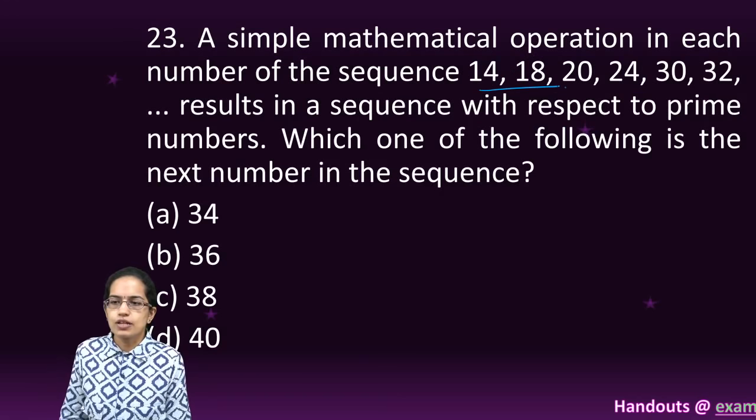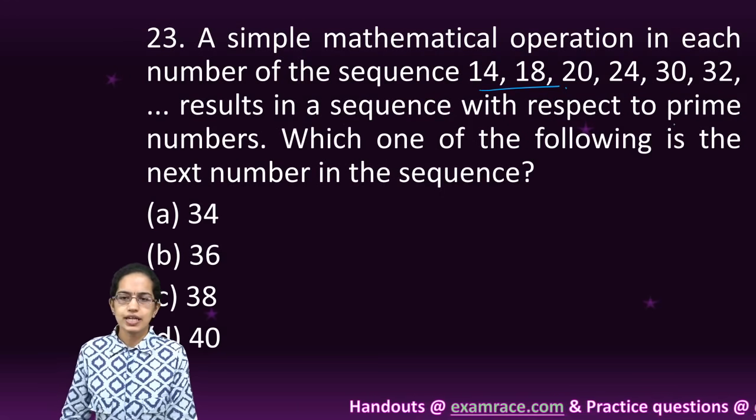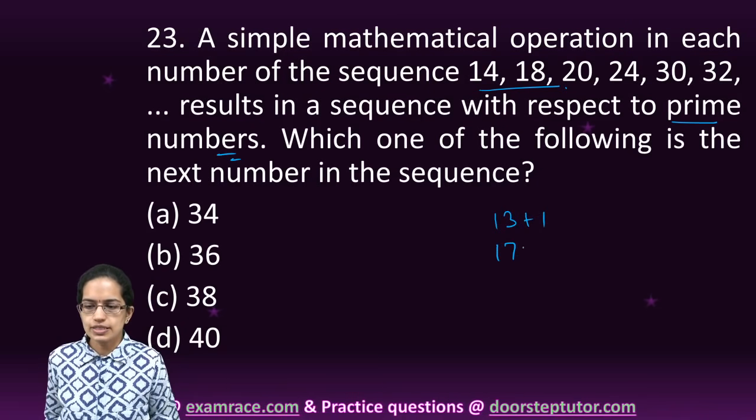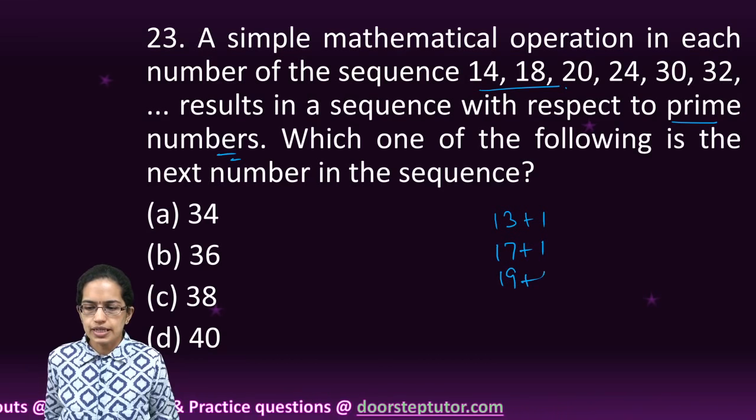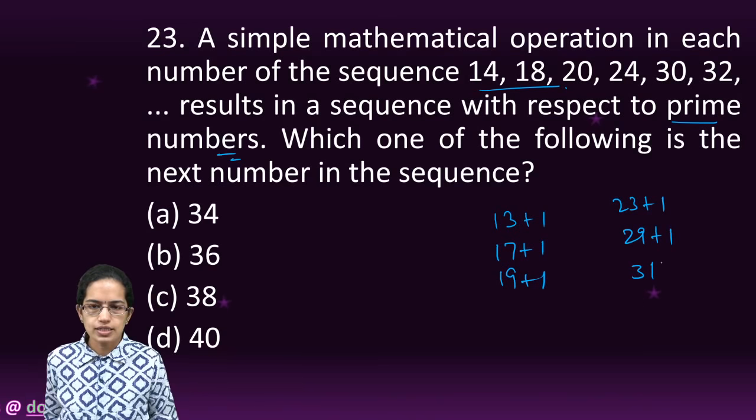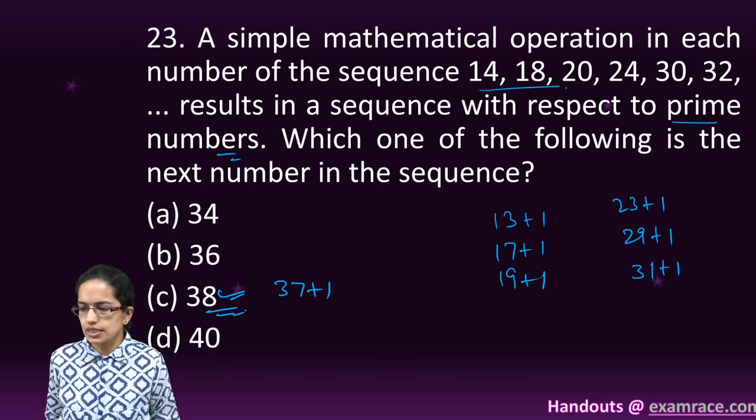The next question is a mathematical operation, a simple number series problem made further easy by giving a hint that it's a prime number. So it is 13 plus 1, 17 plus 1, 19 plus 1, 23 plus 1. Then you would have 29 plus 1, 31 plus 1 and finally you would have 37 plus 1 which is 38.